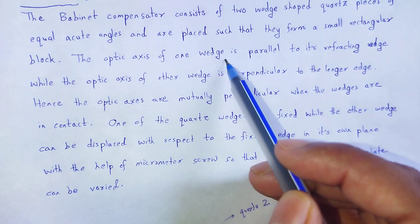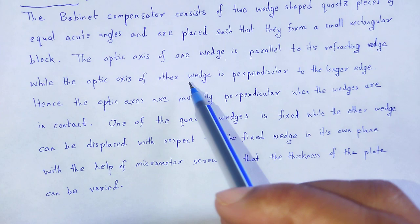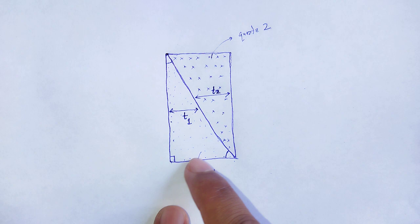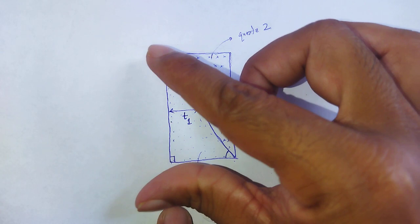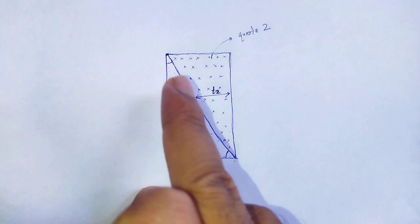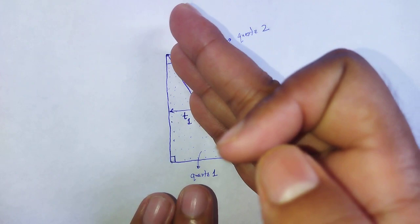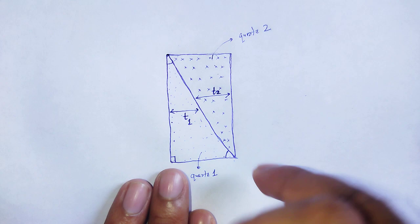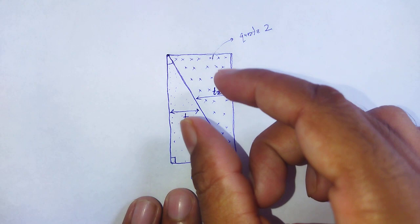The optic axis of one wedge is parallel to its refracting edge, while the optic axis of the other wedge is perpendicular to the longer edge. As we construct it in such a manner that quartz crystal one and quartz crystal two look like a small rectangular box, the optic axis of one wedge is parallel to the refracting edge whereas the optic axis of the other is perpendicular to the longer wedge. Hence, these two optic axes are mutually perpendicular when the two wedges are in contact with each other.